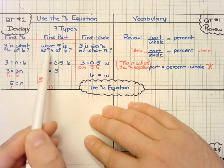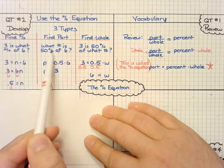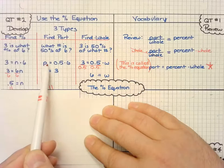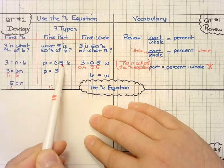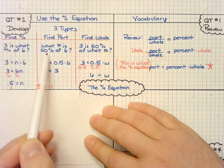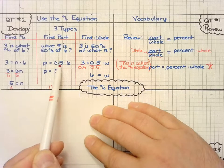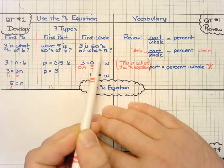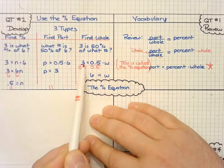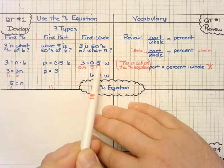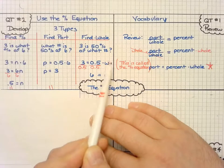In this one, what number is 50%? What number, P, is equal to 0.5 times six, because I know 50% can be written as a decimal. And then three is 50% of what number? So three is 50% of what number, the whole number.